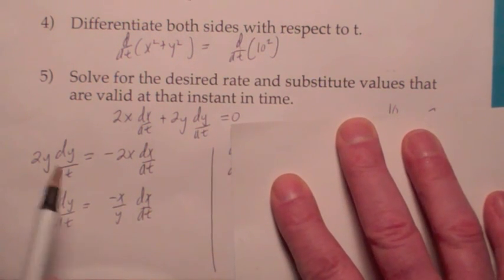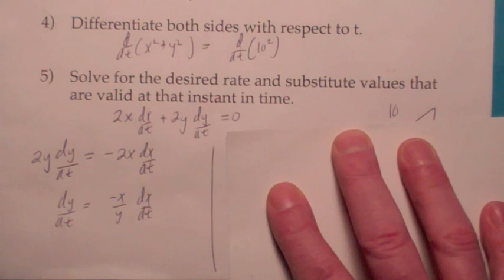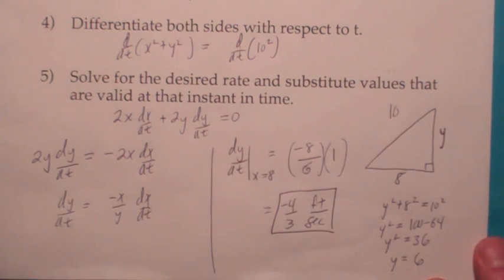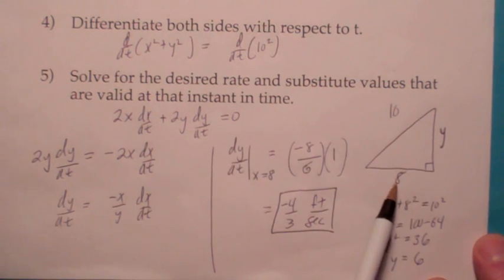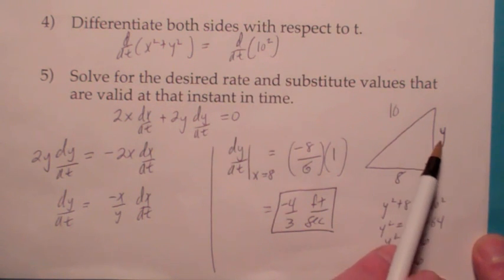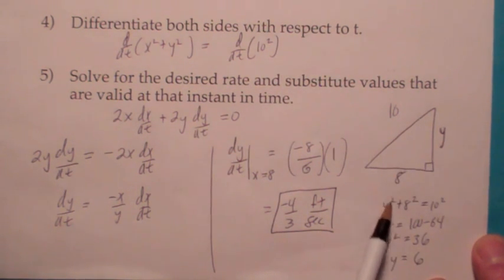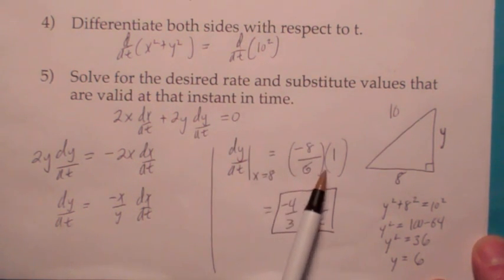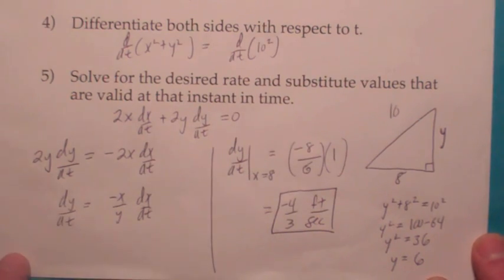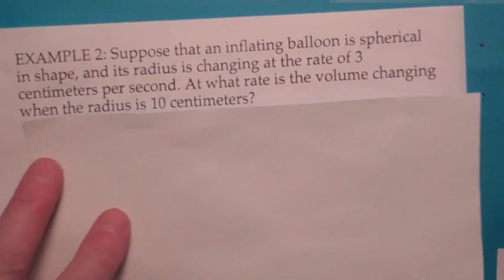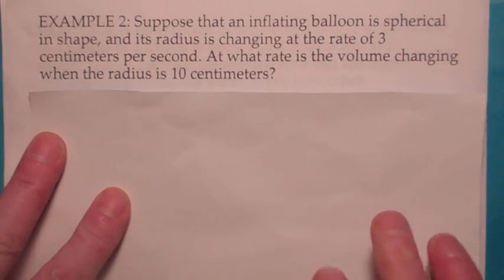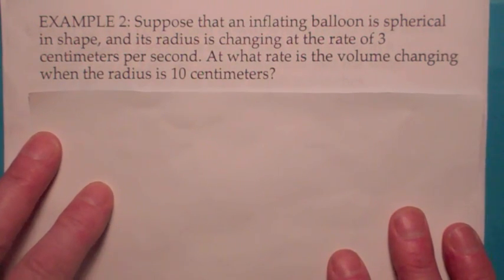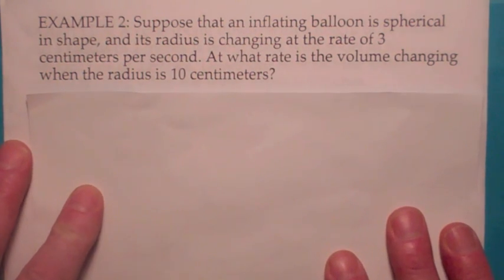The last step is important because you want to find dy/dt when x equals 8. So you need to go back to the original picture and replace x with 8. Then you can find y at that instant by using the Pythagorean Theorem, and all you have to do is plug everything in. You plug in negative x over y times dx/dt, simplify, and you get negative 4/3 feet per second. I would call that first example a Pythagorean Theorem type problem.